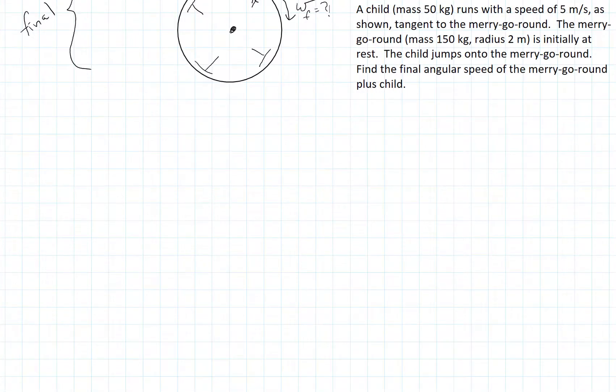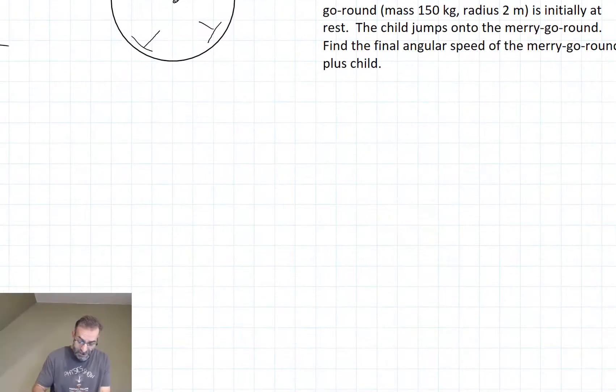Because there's no net torque on the system, the merry-go-round is free to rotate on a frictionless axle. We can use conservation of angular momentum.